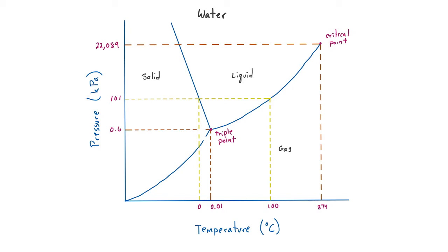The intersection of all three lines here is called the triple point. This is called the triple point because all three phases — ice, liquid water, and water vapor — can exist at the same time. The pressure and temperature at the triple point are much different than atmospheric conditions. The pressure is 0.6 kilopascals, which is very low pressure, and the temperature is 0.01 degrees Celsius, just a very small amount above freezing.